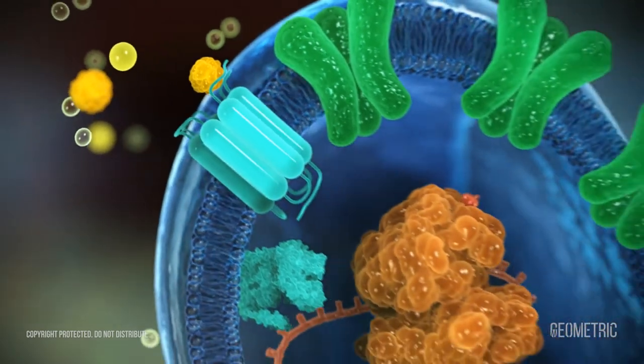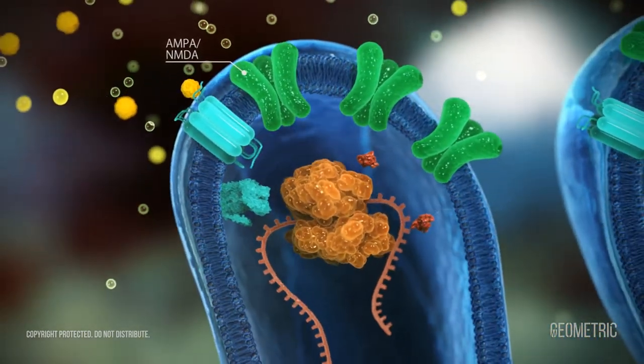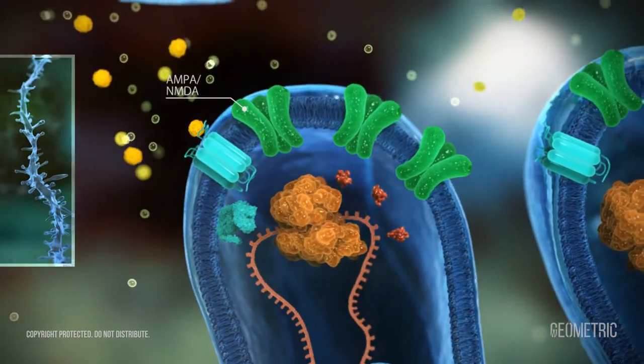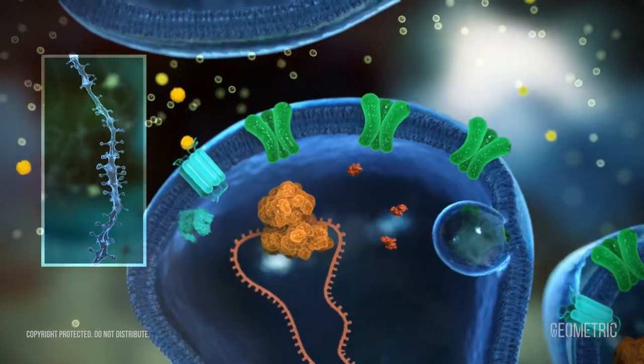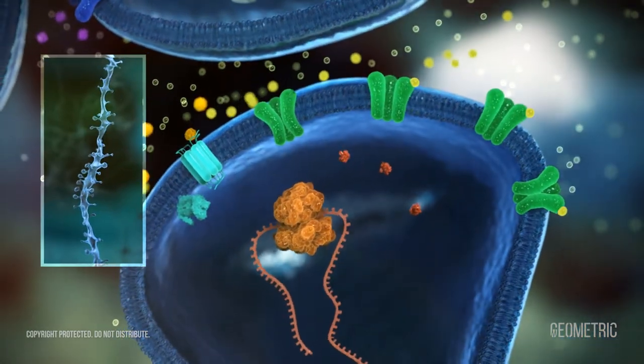This decreases mGlu-R5 stimulated protein synthesis and slows removal of AMPA and NMDA receptors. The result is an increase in AMPA and NMDA receptors toward normal levels and restoration of the normal shapes of dendritic spines.